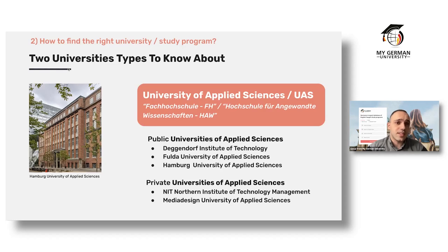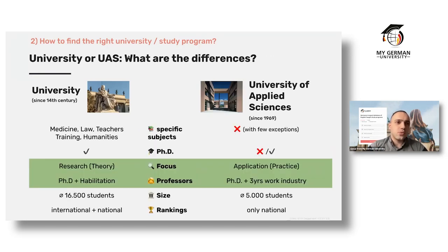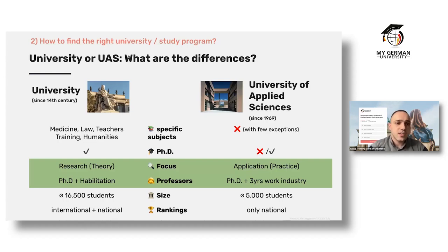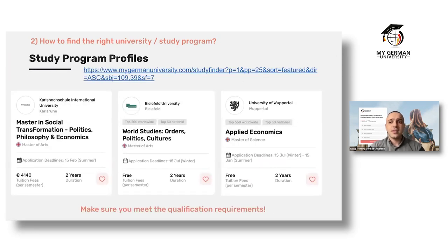You may not have this distinction in your home country. In general, a Universität focuses more on research and theory, while a University of Applied Sciences focuses on application and practice. This is a generalization — if you want more detail, feel free to email me.